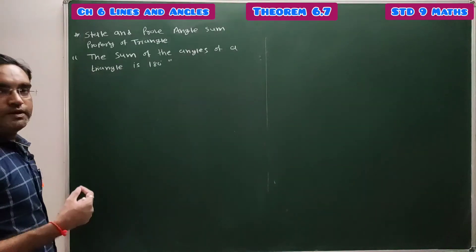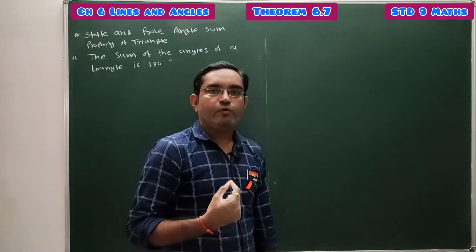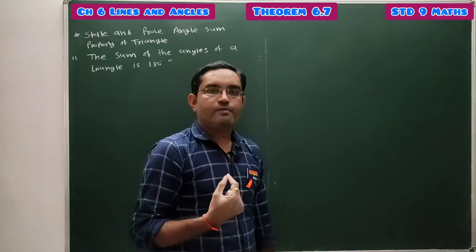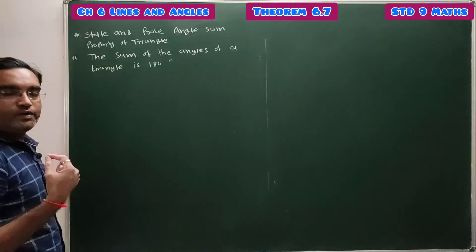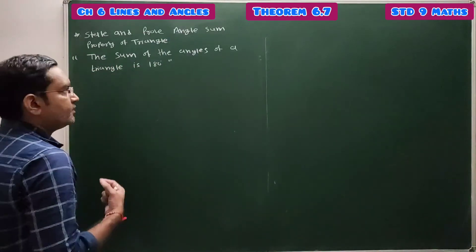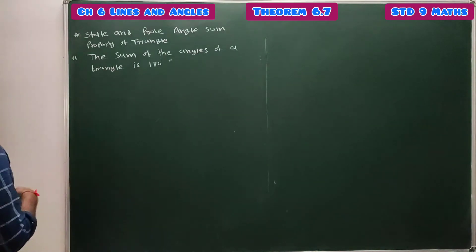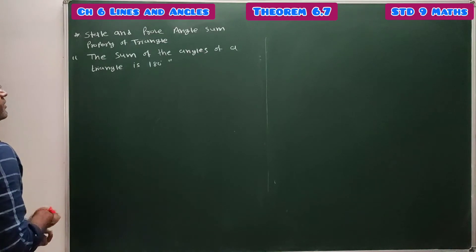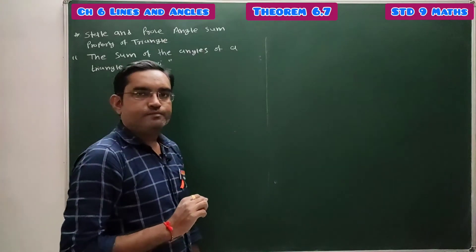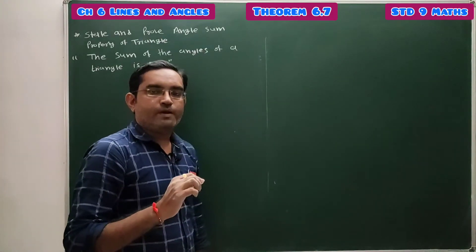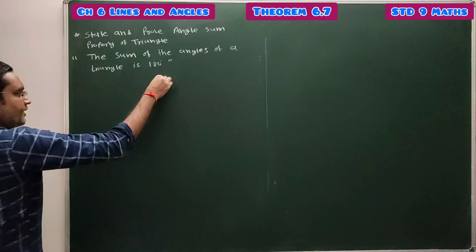Pause the video and note it down. Now the second method to prove the angle sum property of triangle. This method uses the definition of the exterior angle of a triangle, which we have already studied. The sum of measures of all the angles of a triangle is 180 degrees — that is what we need to prove.